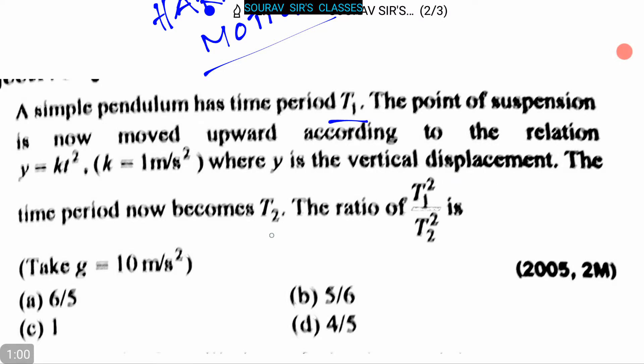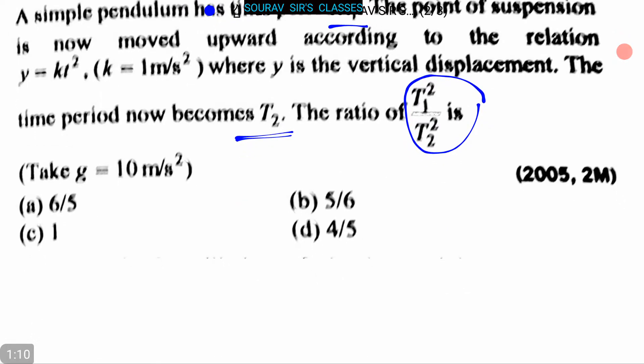The time period now becomes T₂. The ratio of T₁²/T₂² we have to find. Four options are given and it is given that g = 10 m/s². Option a is 6/5, option b is 5/6, option c is 1, and option d is 4/5.